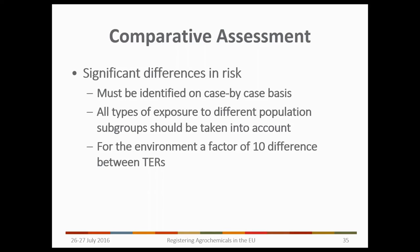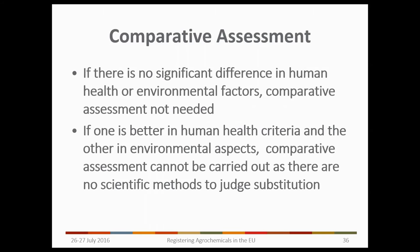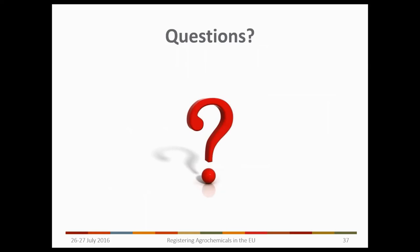In terms of what constitutes a significant difference in risk, this must be assessed on a case-by-case basis, taking all types of exposure to different population subgroups into account. For the environment, a factor of at least 10 difference in the toxicity exposure ratio must exist. If there's no significant difference in human health or the environment, comparative assessment is not needed. And if one alternative is significantly better in one area but worse in another, comparative assessment cannot be applied as there is no scientific method on which to judge substitution.